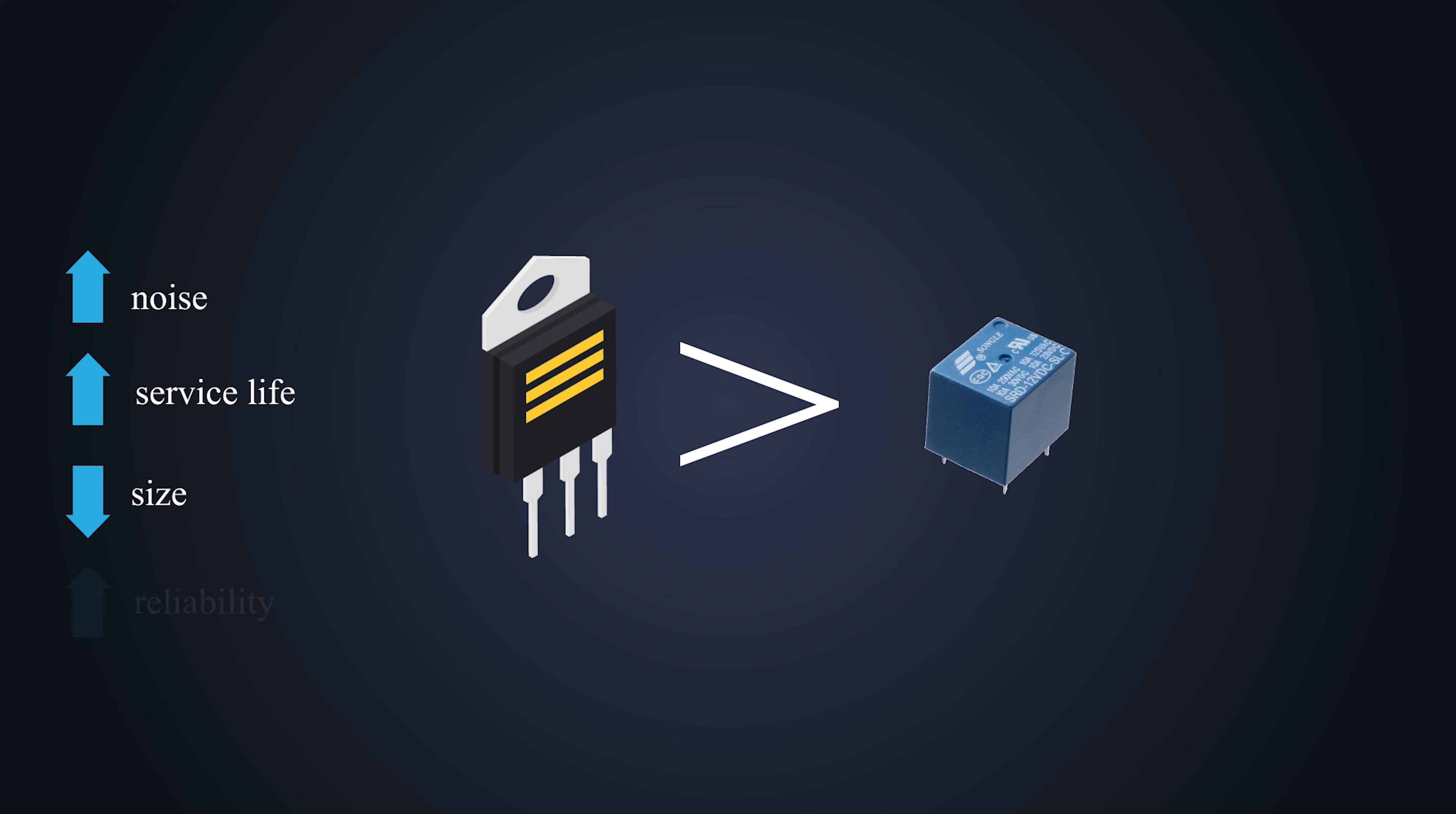However, compared with a relay, MOSFETs are way superior in noise, service life, size, and reliability. So using MOSFETs instead of relays is always a better option. Also, the relays cannot control the current of the motor, so we might still need a MOSFET for precise control against current changes.